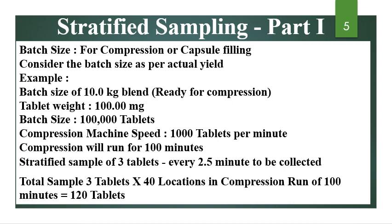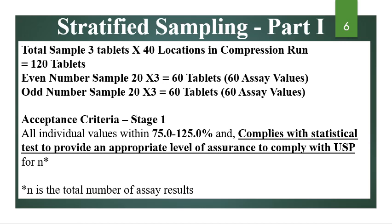Please understand that this calculation needs your 100% attention. Total sample of 3 tablets into 40 locations in the compression run — location means time intervals — gives 120 tablets. From locations 1, 2, 3, 4... up to 40, you will have even-numbered and odd-numbered samples. 20 will be even-numbered and 20 will be odd-numbered. Even number: 20 into 3 = 60 tablets. Odd number: 20 into 3 = 60 tablets. Out of the 120, you divide into even and odd, giving 60 tablets each. Generally, odd-numbered samples are taken: locations 1, 3, 5, 7, and so on — 20 locations, 3 tablets each — giving 60 total values for assay.